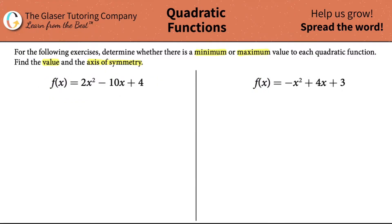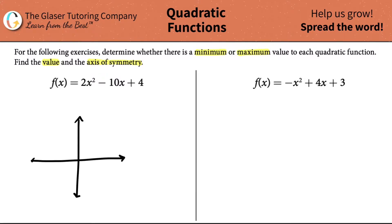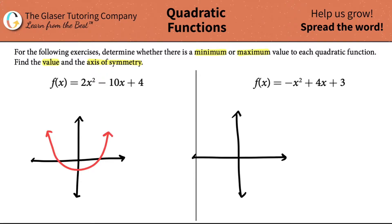We're going to discuss whether or how we can tell if there's going to be a minimum or a maximum. You should know that there are two different types of quadratic functions. Quadratic functions are either smiling at you — here's a smile, the teeth are right here — or they're frowning at you.